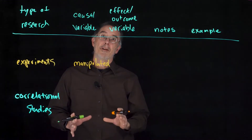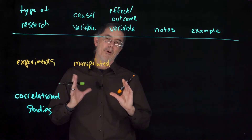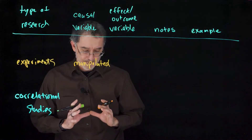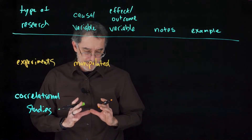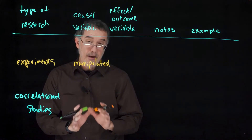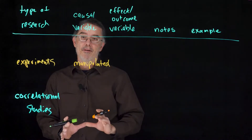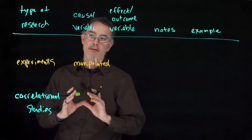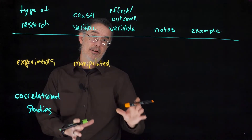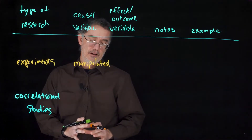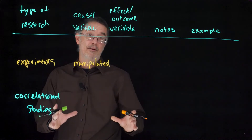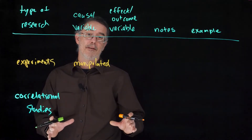A manipulated variable is one in which the researcher assigns the participants to different experiences or different values of that independent variable. The term 'manipulated' is a little non-intuitive.